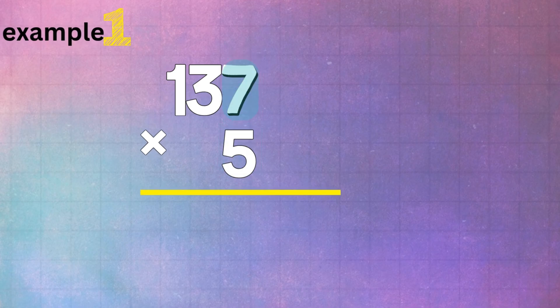First, multiply 5 times 7, which gives us 35. Since that's a two-digit number, we'll write down the 5 in the ones place and carry over the 3.